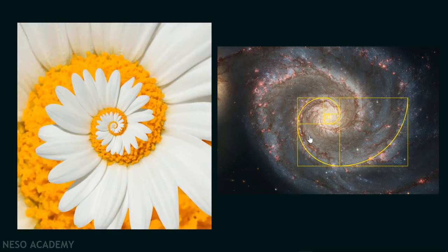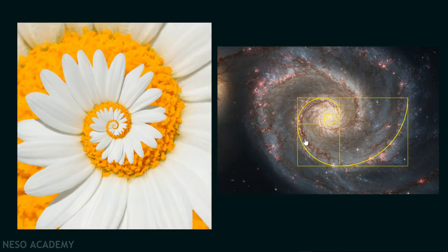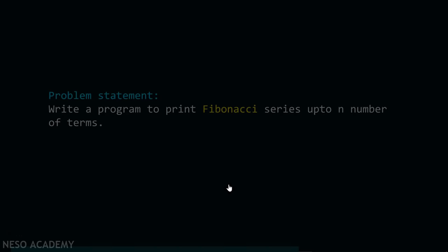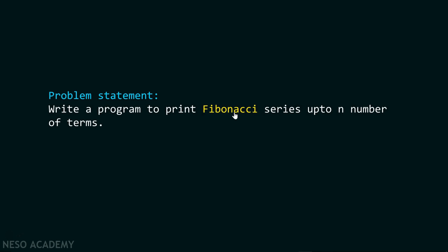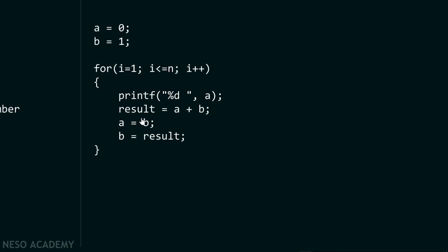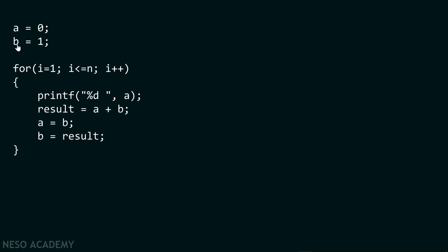After having the motivation for studying Fibonacci series, let's get back to our problem statement. We need to write a program to print Fibonacci series up to n terms. We initialize a to zero and b to one, then run a for loop from 1 to n. Inside the loop, we print the value of a, calculate result as a plus b, then set a equal to b, and b equal to result.